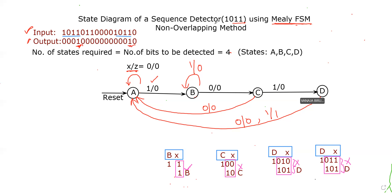To draw the state diagram, identify the number of states required, which is equal to the number of bits to be detected. The number of bits to be detected is 1011 — there are four bits. So the number of states required equals four. Let them be labeled as A, B, C, D.